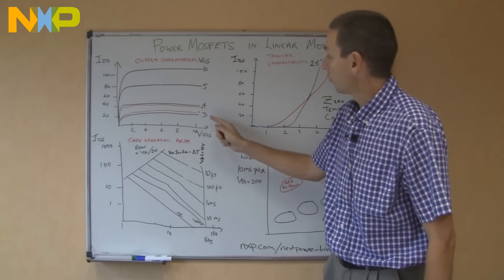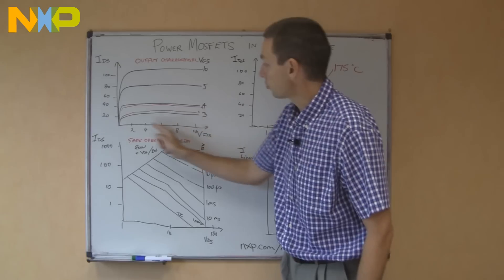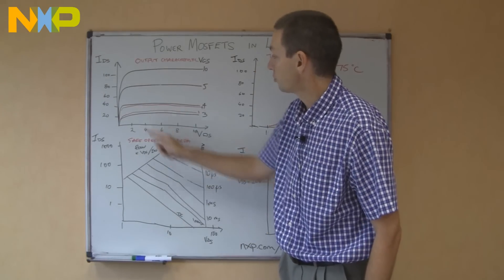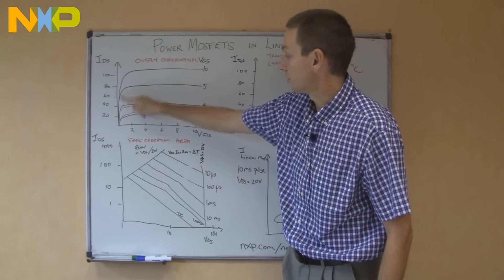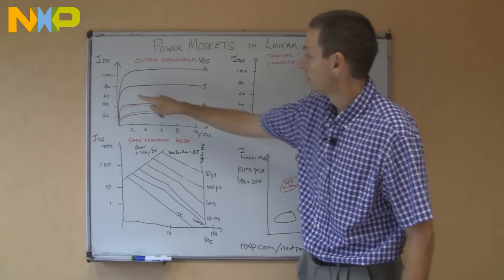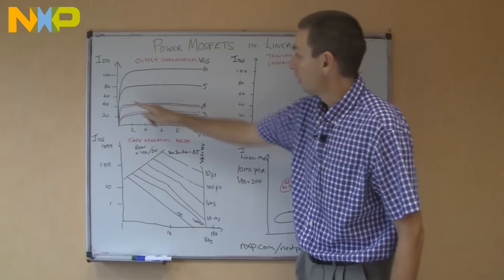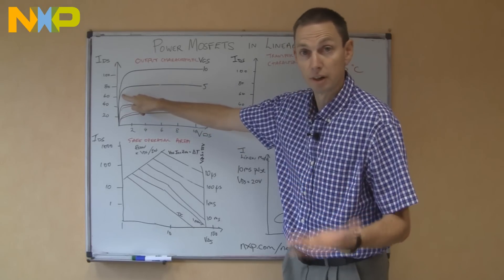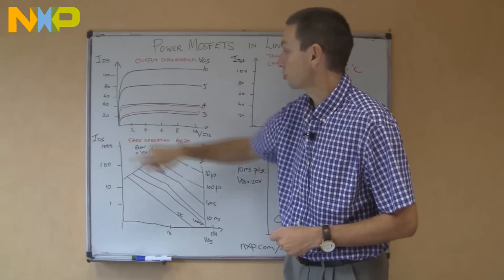When we turn the MOSFET on, we apply a very large gate bias, and the source drain voltage reduces, and so the MOSFET is then running at a very low source drain voltage. So the normal operation is to go from a position somewhere here to a position somewhere over there. When the MOSFET is fully on, the resistance is very, very low.